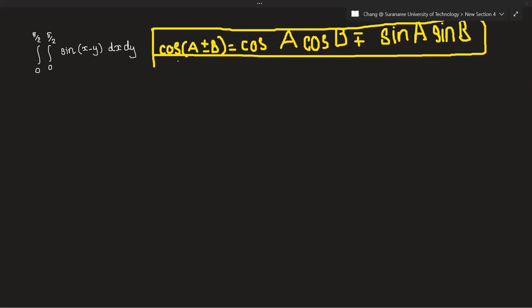The formula is cos(a plus or minus b) equals cos a cos b minus plus sin a sin b. This is the integration.